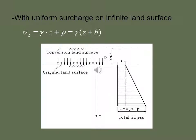With a uniform surcharge on infinite land surface, sigma z is equal to gamma into z plus p. P is the pressure on the surface, that is the original land surface. Above that, some other land conventional surface or some other surface. This total stress is equal to sigma z is equal to gamma into z plus p, that is external pressure.